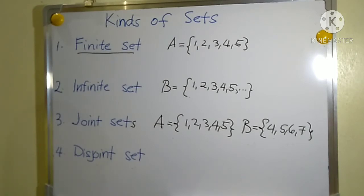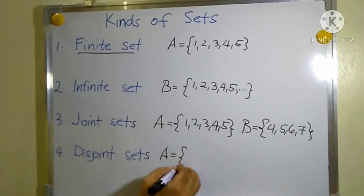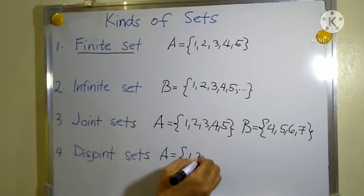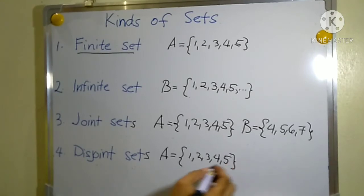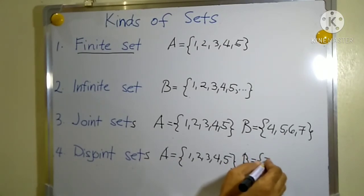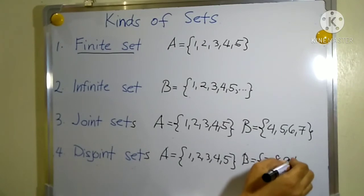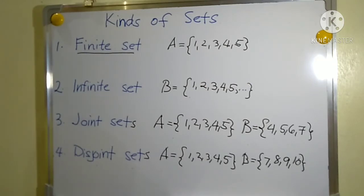The last kind is called disjoint sets. For example, set A is a set whose elements are one, two, three, four, and five, and set B is a set whose elements are seven, eight, nine, and ten. We cannot see any common elements between the two sets, so we call these sets disjoint sets.